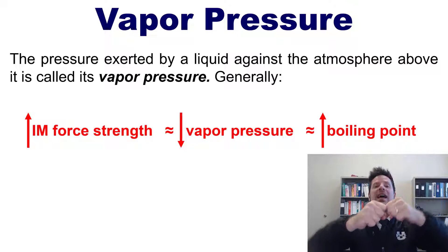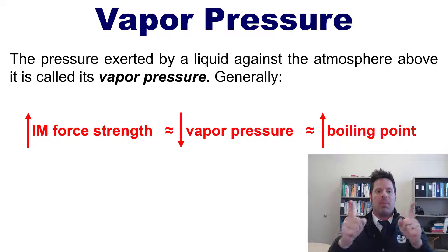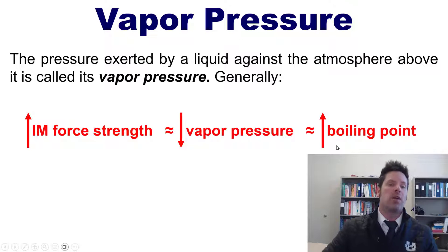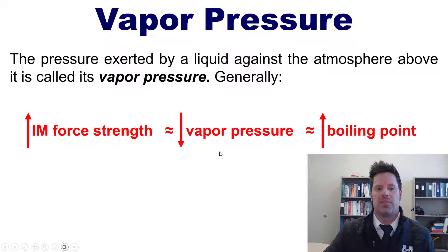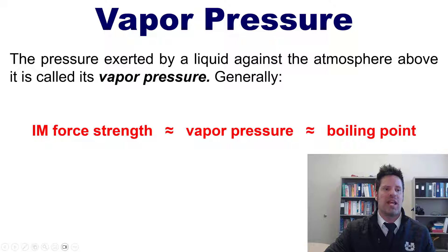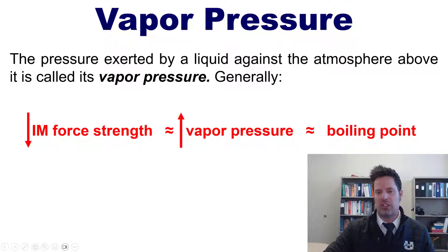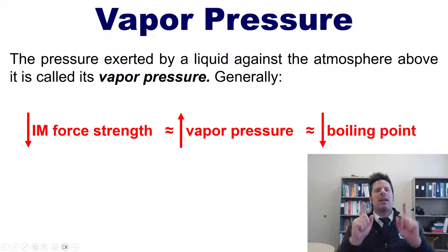Stronger intermolecular forces mean a higher boiling point, and that means the substance will vaporize less — in other words, it has a lower vapor pressure. Of course, all of these arrows can be flipped: as intermolecular force strength decreases, vapor pressure increases and boiling point goes down.